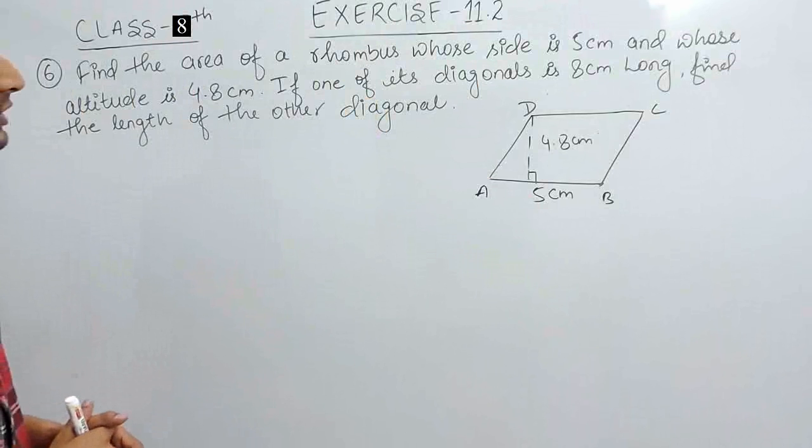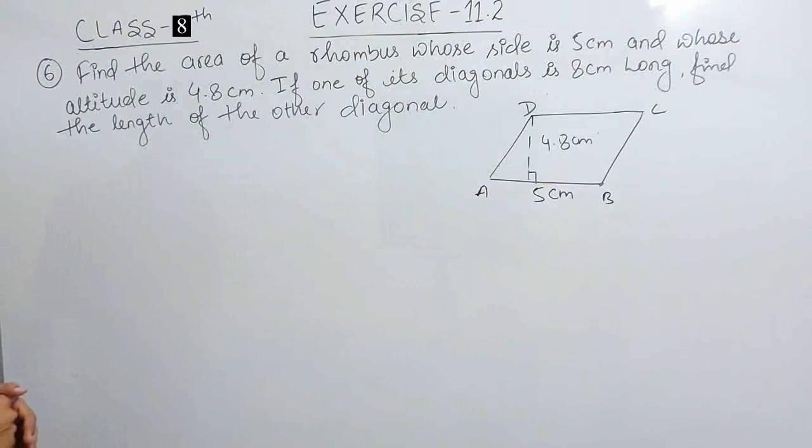In question number 6 you have to find the area of a rhombus whose side is 5 cm and whose altitude is 4.8 cm, and if one of its diagonal is 8 cm long you have to find the length of the other diagonal.